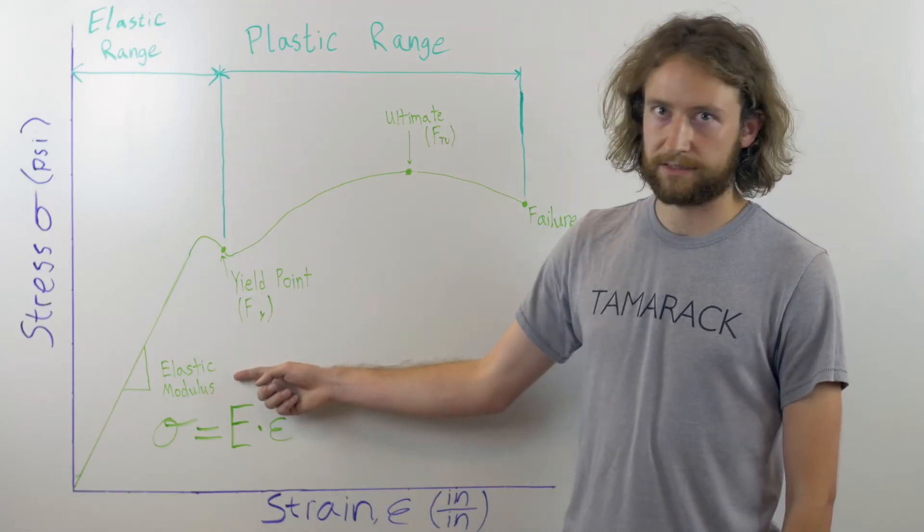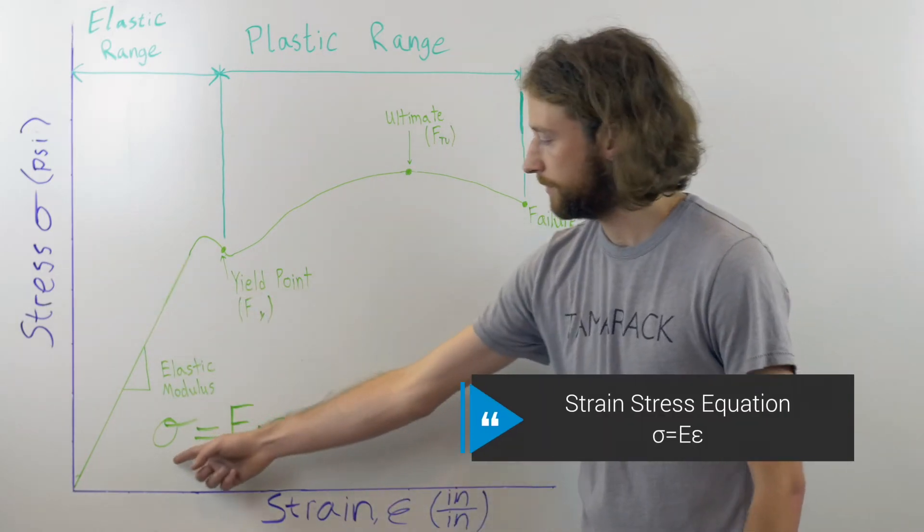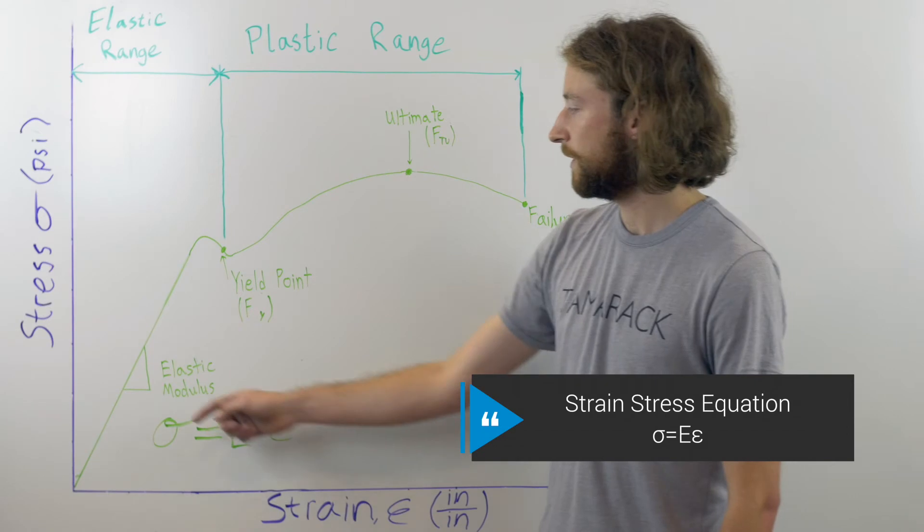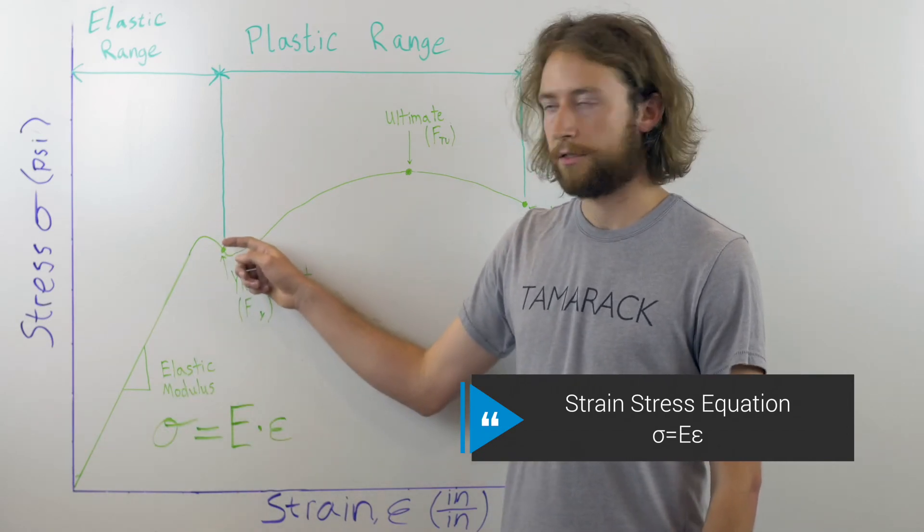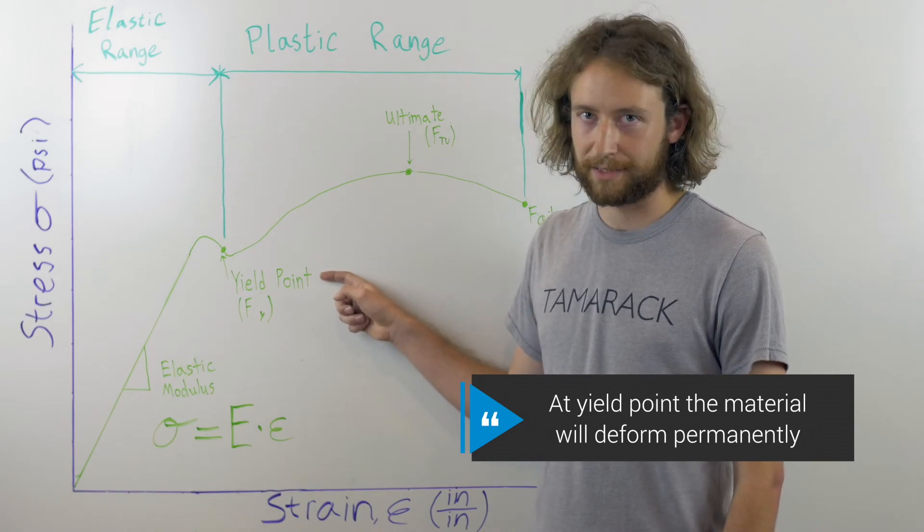The elastic modulus can then be used to relate stress with strain using this equation here. As you increase your stress, you will eventually get to what is known as the yield point, and here is where the material will deform permanently.